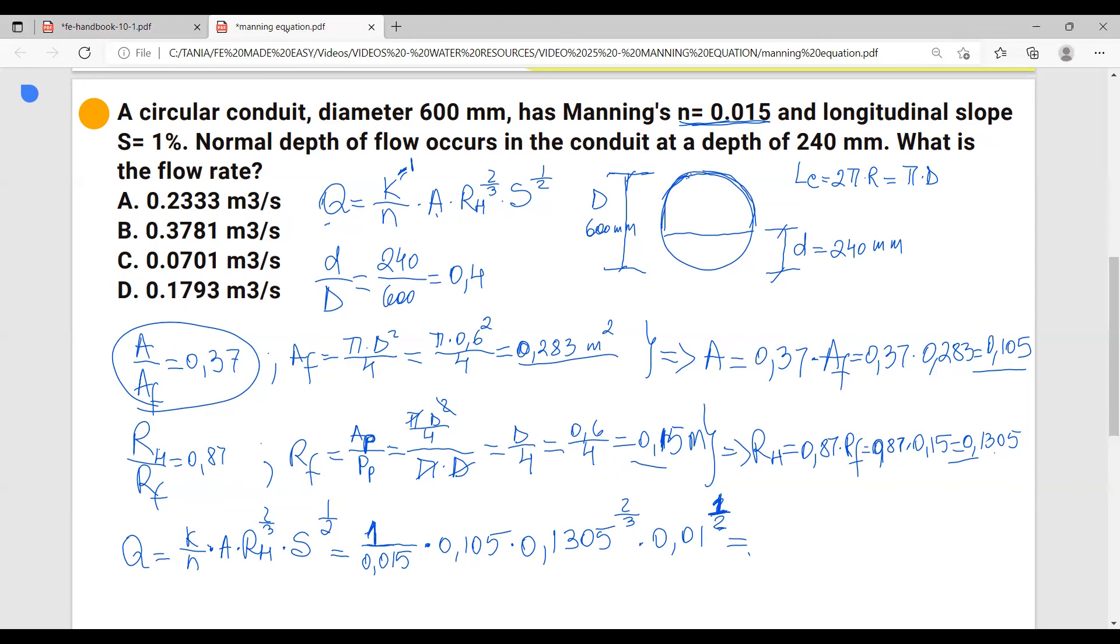And these are meter cubes over second, and the closest one is going to be D, 0.1793.